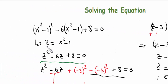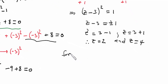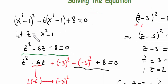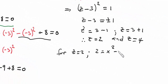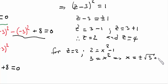Now we back-substitute. Remember z equals x squared minus 1. For z equals 2: we have 2 equals x squared minus 1, so x squared equals 3, which means x equals plus or minus the square root of 3, approximately plus or minus 1.73.